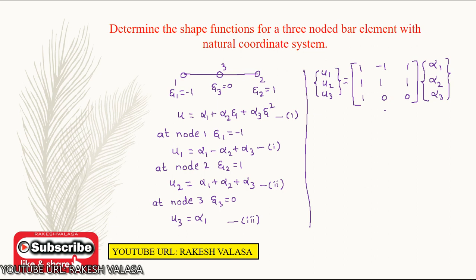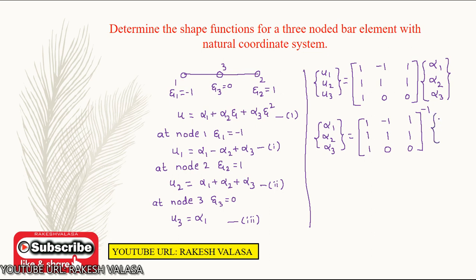From this equation, we need to determine the unknown coefficients alpha 1, alpha 2, and alpha 3. Moving the square matrix to the other side, we write [alpha1, alpha2, alpha3] equal to the inverse of the matrix [1, -1, 1; 1, 1, 1; 1, 0, 0] times the displacement vector [u1, u2, u3].